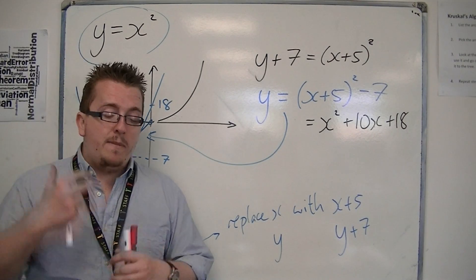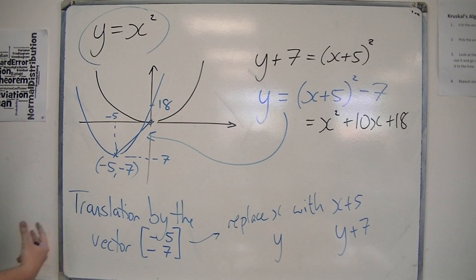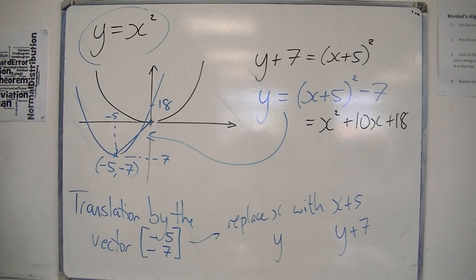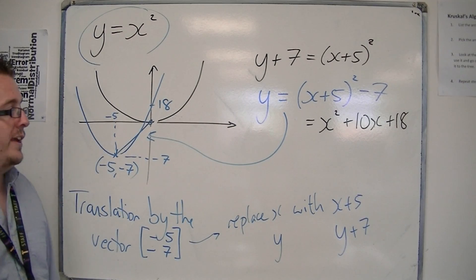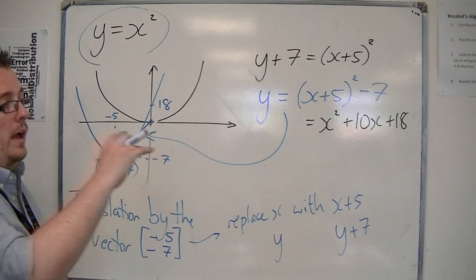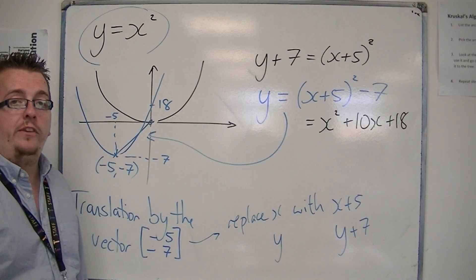So remember, what I'm employing here is some sketching and we'll be looking at that in more detail. But this is how you use translations to move the parabola around the grid, around the Cartesian grid.